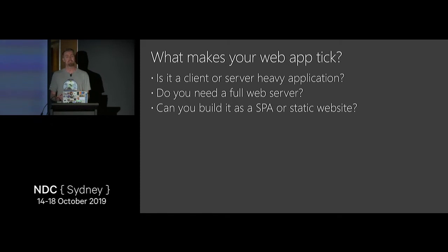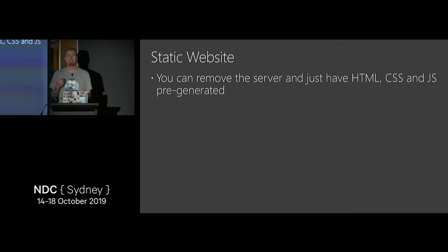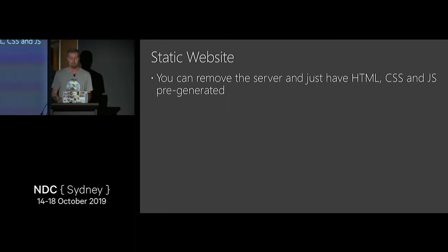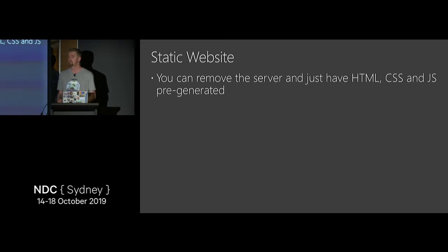Single page application frameworks like React, Vue.js, and Angular make it easy to build a rich client experience without a huge server behind it. Static site generators like Gatsby.js, Hugo, and VuePress let you generate just HTML, CSS, and JavaScript files. If we can go the route of a static website, that's where we can probably generate the best cost savings — we don't necessarily need a full web server. But there are trade-offs to consider: deployment pipelines, multiple environments, A/B testing, and how you embed environment-specific API keys into static HTML.